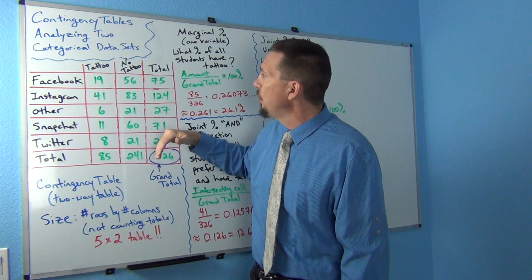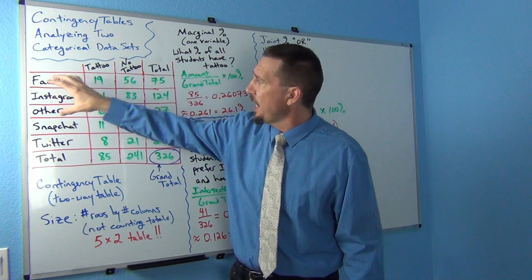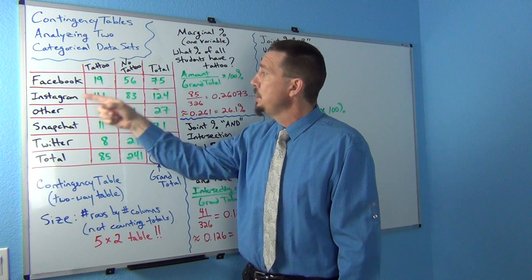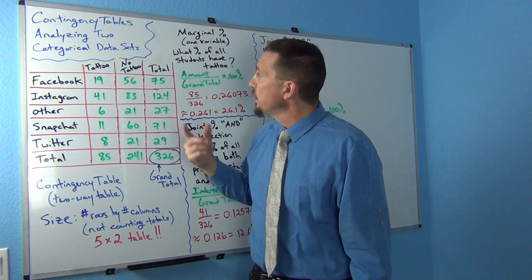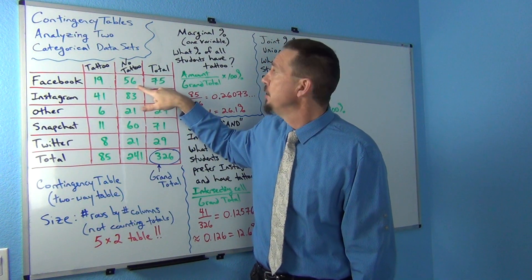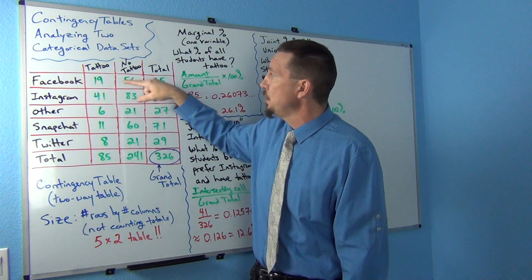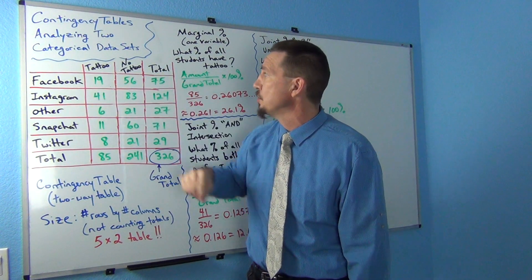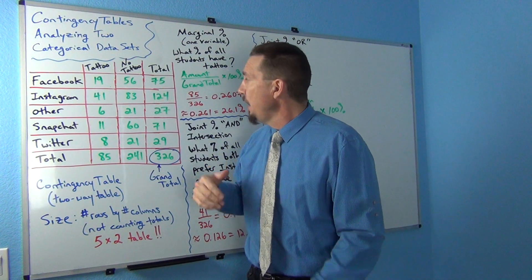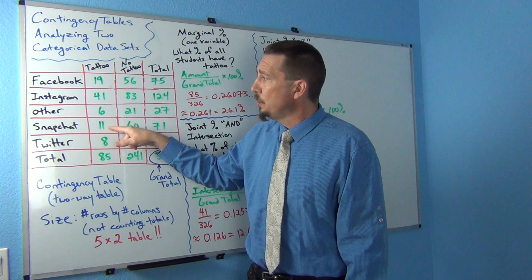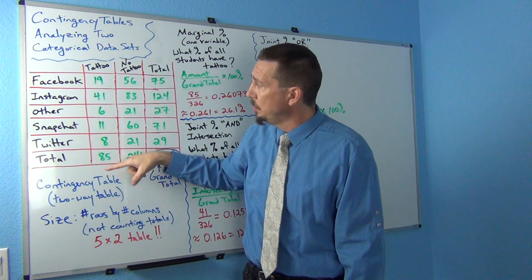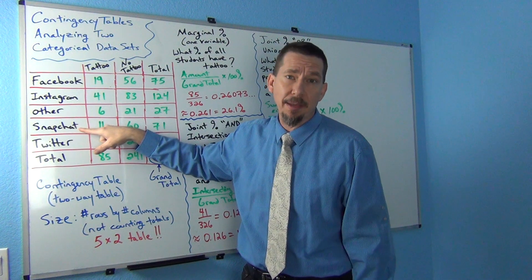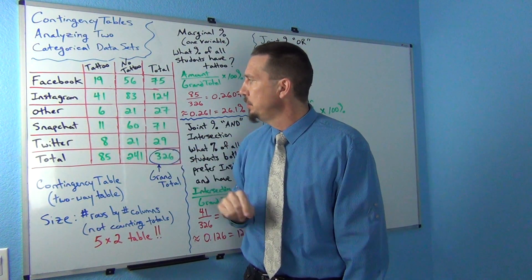Let's look at the contingency table to understand the individual cells — what's a column and what's a row. These can be switched; I have social media as the rows and tattoo or not as the columns. For example, the number 56 is in the 'no tattoo' column and the Facebook row — those are 56 people who did not have a tattoo and preferred Facebook. The number 11 is in the 'tattoo' column and the Snapchat row — 11 people have a tattoo and prefer Snapchat.